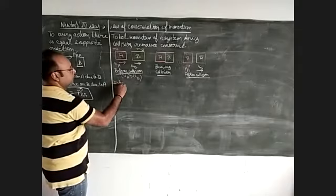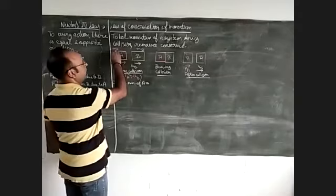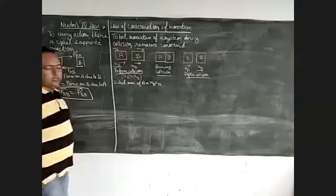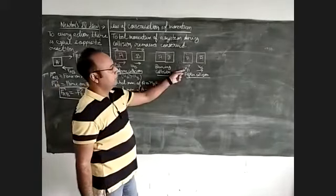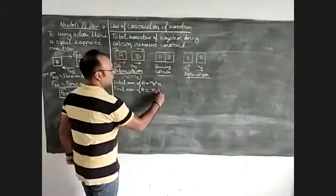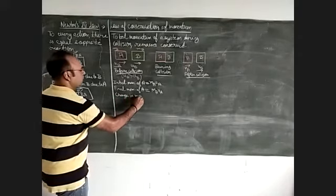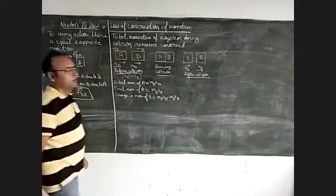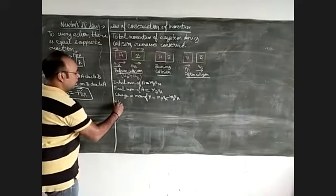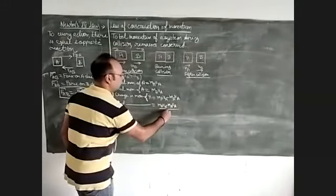Let's talk about body A. The initial momentum of A equals mass times initial velocity, which is m_A × U_A. The final momentum of A equals m_A × V_A, since mass does not change. Therefore, the change in momentum of A is: m_A × V_A − m_A × U_A. The rate of change in momentum of A is: (m_A × V_A − m_A × U_A) / t, where t is the time.